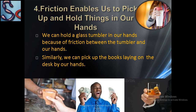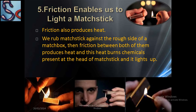Friction also enables us to pick up and hold things in our hands — like a glass cup of tea, bread, or ice cream. We can hold a glass tumbler in our hands because of the friction between the glass and our hand. Similarly, we can pick up books from a desk due to friction. If a glass is slippery or has oil on it, we are unable to hold it and it slips down.